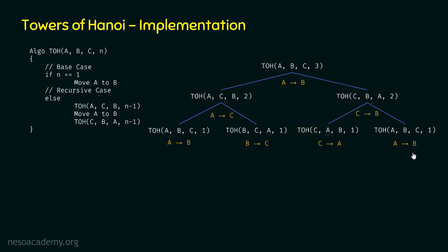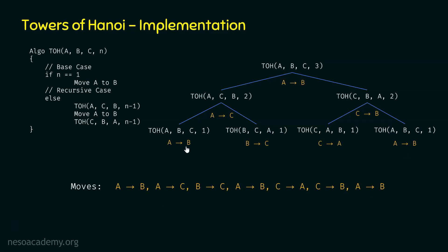We are now done with all the function calls and have obtained all the moves. The order is: A to B, A to C, B to C, A to B, C to A, C to B, then A to B. These are all the moves — a total of 7 moves. We learned that for 3 discs there will be 7 moves, and we got exactly 7. So it makes sense.